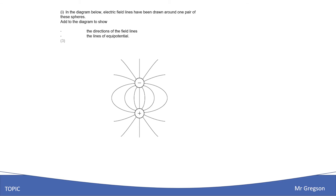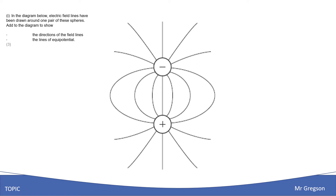Moving on to a new question — I've taken this out of the middle of a bigger question. A question like this will always be part of a bigger question and it's almost always disproportionately rewarded. This is worth three marks and I'm pretty sure I could draw this in under a minute. Read through it: on the diagram, draw the direction of the field lines and the lines of equipotential. The equipotential lines are probably worth two marks and the direction of your field lines worth one.